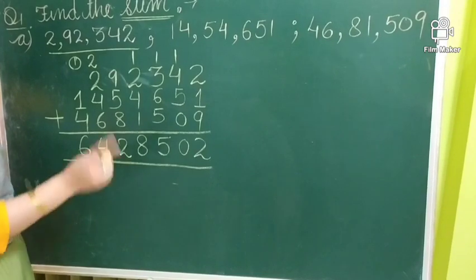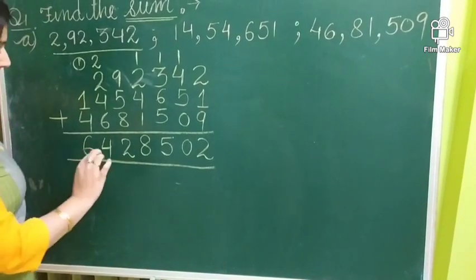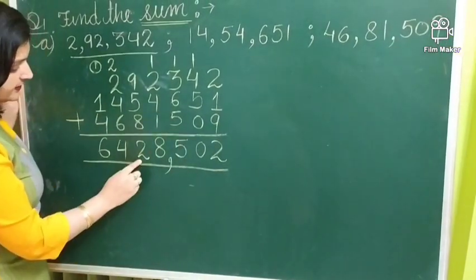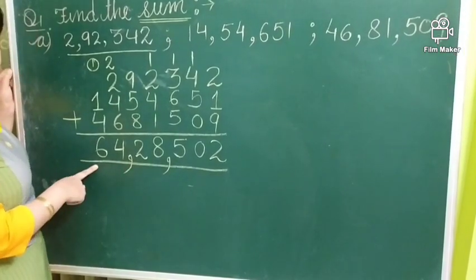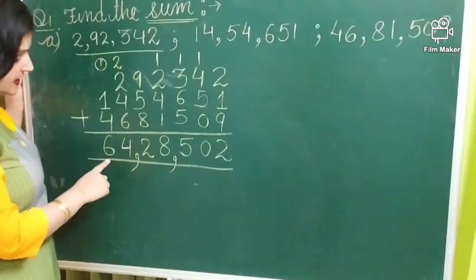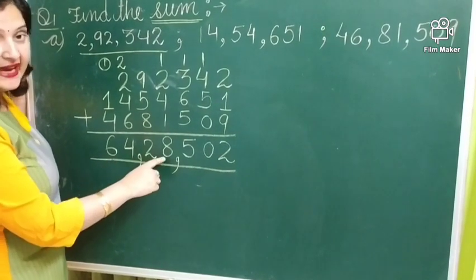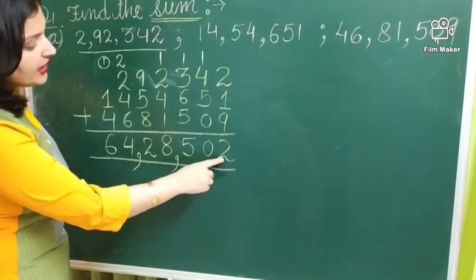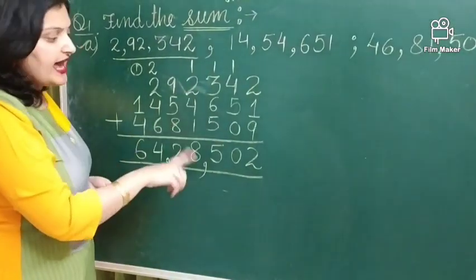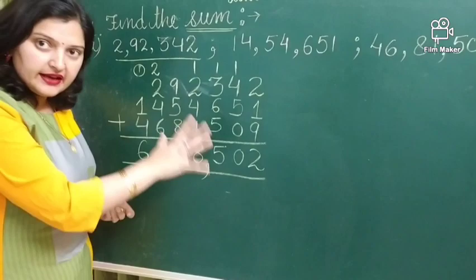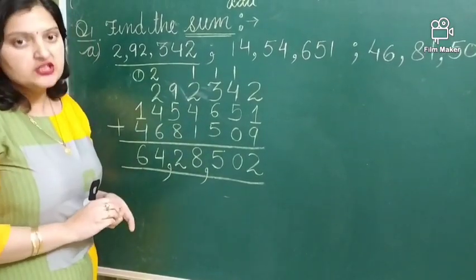After adding the number, you apply the commas in your answer. Then, 100s and 2 digits. And then, lakh. So, your answer is 64,28,502. In this way, you can arrange or add any type of large numbers.